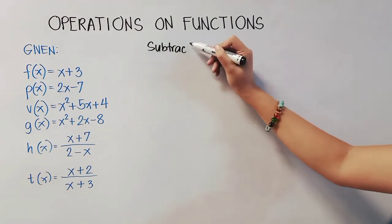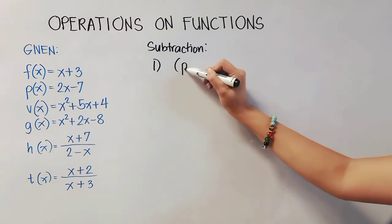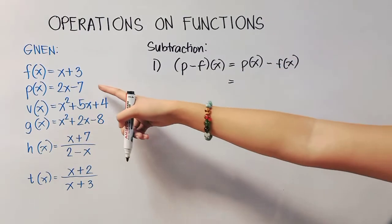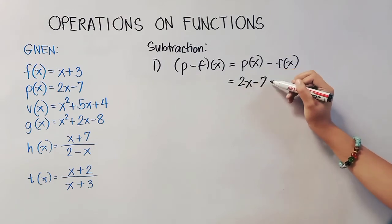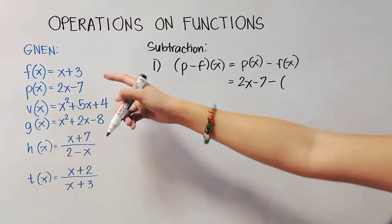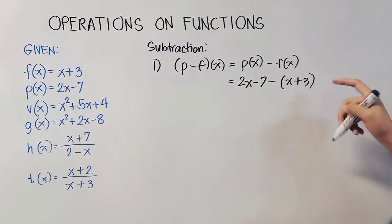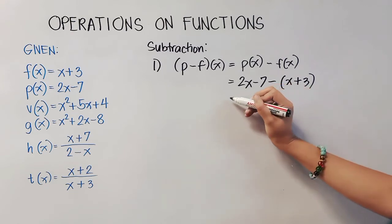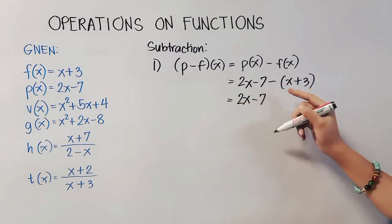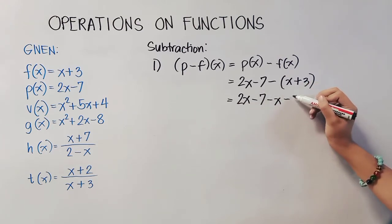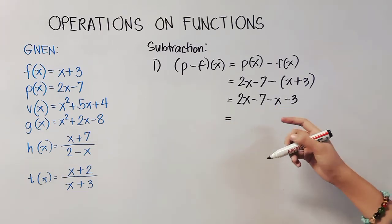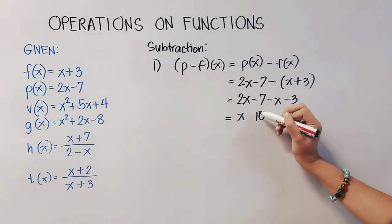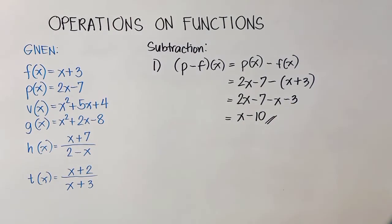We are now on subtraction. Number 1 is written as P(x) − F(x). Substituting: P(x) = 2x − 7, minus — enclose the second function in parentheses — (x + 3). We enclose it so we can distribute the negative: negative times positive gives −x, and negative times positive gives −3. Like terms: 2x − x = x. Same signs for constants: −7 − 3 = −10. Final answer: x − 10.